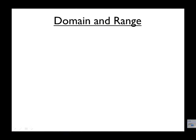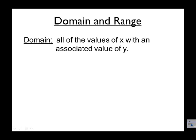In this video we're going to take a look at domain and range. We'll have other videos for the other properties of a function. The domain is all the values of x with an associated value of y. All that means is that there'll be an x and y coordinate that will form a point somewhere on the graph.